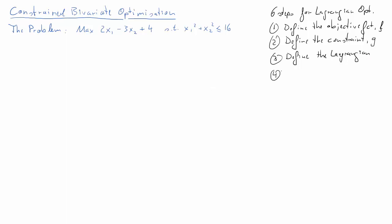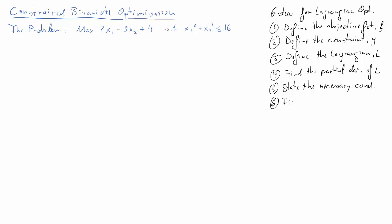The fourth step is to find the first order partial derivatives of the Lagrangian — we'll call the Lagrangian capital L. Step number five is to state the necessary conditions, meaning the conditions that a potential optimum has to meet. In the last and final step, we use a little bit of algebra to find the values of x₁ and x₂ that meet these conditions.